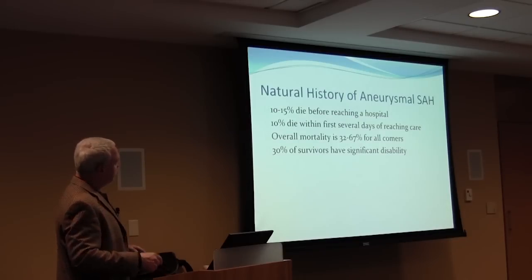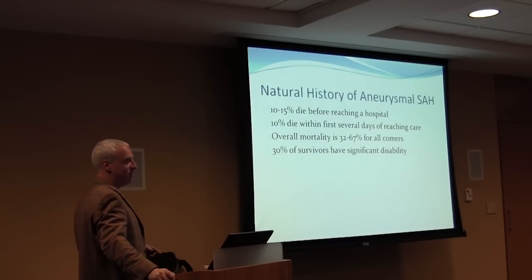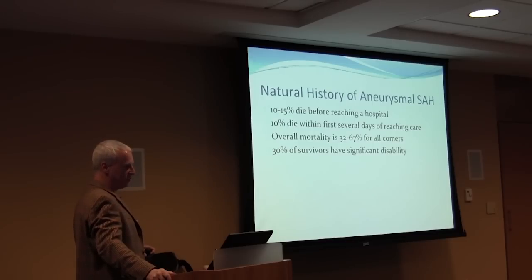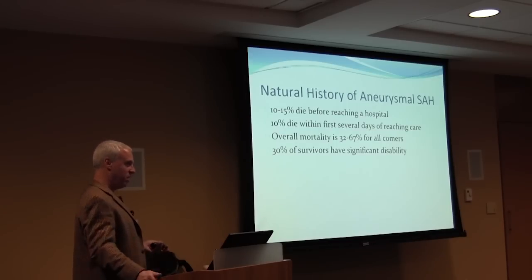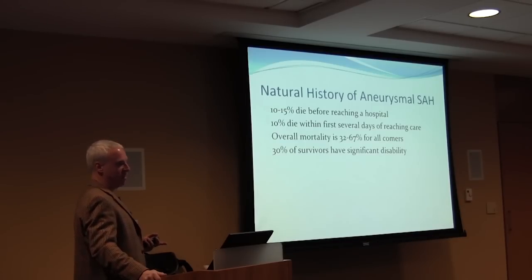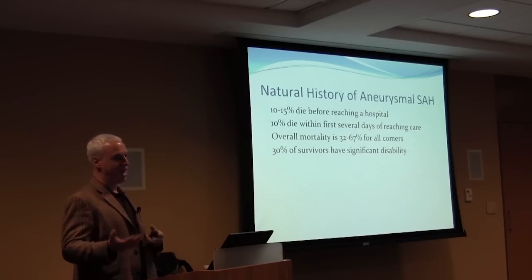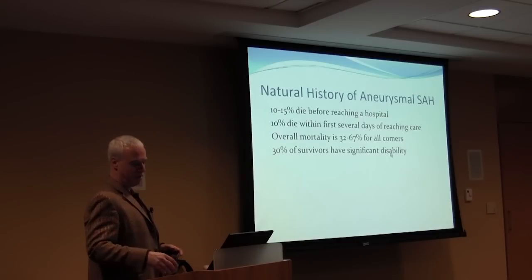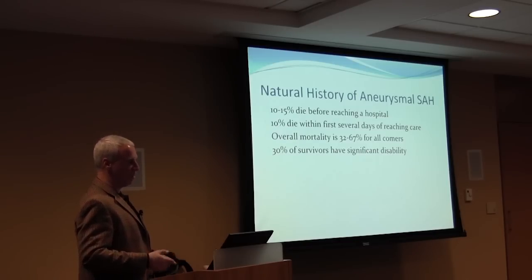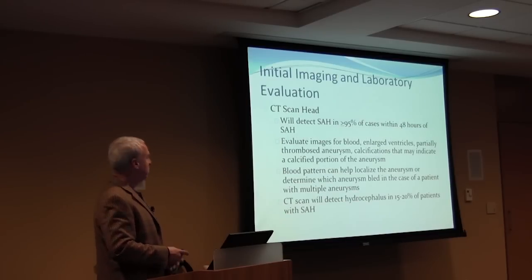What is the natural history of aneurysmal subarachnoid hemorrhage? Ten to 15 percent of people die before ever reaching a hospital. Ten percent die no matter what you do within several days of reaching a hospital — whether you treat with coiling or not — either from the initial effects of the bleed or from re-bleeding if not treated. Overall mortality is between 32 and 67 percent, and 30 percent of survivors have significant disability.